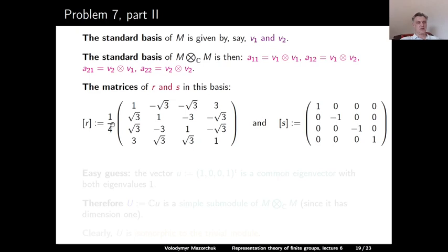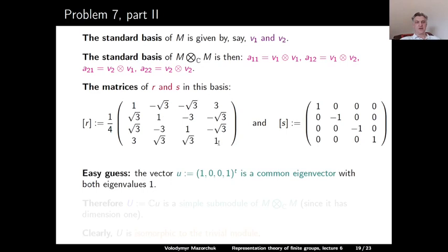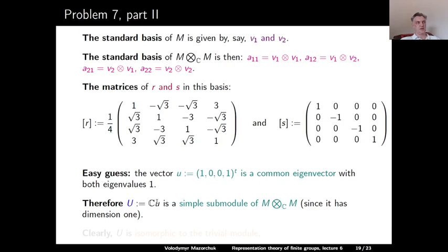The matrix of S on M⊗M is diagonal with entries (1,−1,−1,1). The matrix of R on M⊗M is (1/4) times the matrix with entries [[1,−√3,−√3,3],[√3,1,−3,−√3],[√3,−3,1,−√3],[3,√3,√3,1]]. By inspection, the element U = (1,0,0,1) is a common eigenvector for both S and R with eigenvalue 1. Therefore the one-dimensional subspace spanned by U is a simple submodule isomorphic to the trivial module.